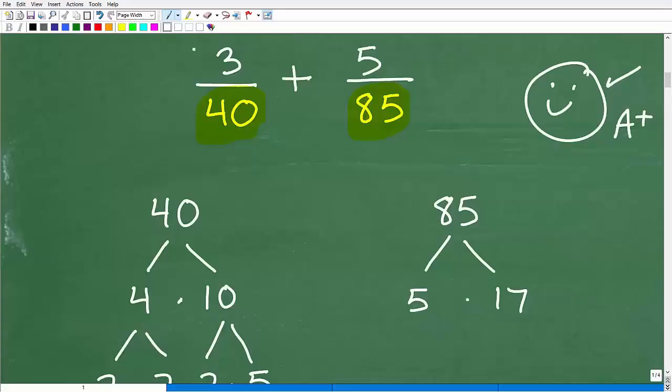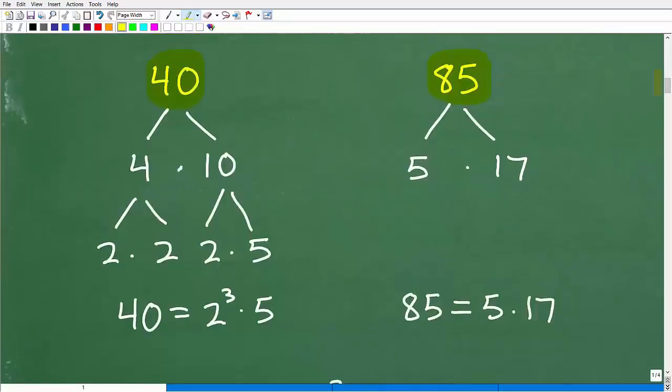All right. How do you find the LCD? Well, we need to prime factor each of the respective denominators. So here we have 40 and here we have 85. This is a quick review. So what you want to do is prime factor each of these numbers. You need to know how to factor. Let's take a look at 40. So 40 is the same thing as 4 times 10. But I can keep factoring. 4 is the same thing as 2 times 2, and then 10 is the same thing as 2 times 5. Now I can't factor anymore because all these numbers are prime factors. So 40 is the same thing as 2 times 2 times 2, we could write that as 2 cubed times 5.